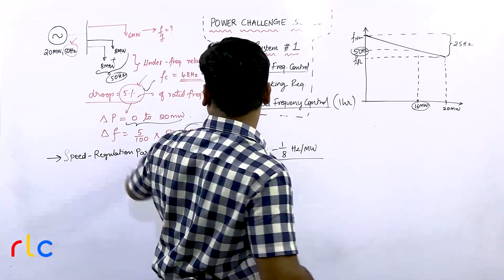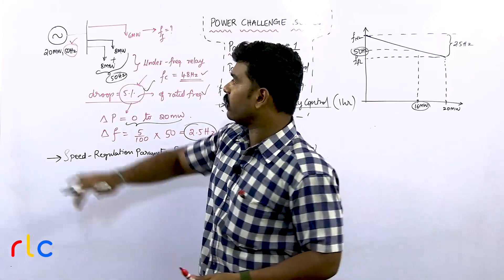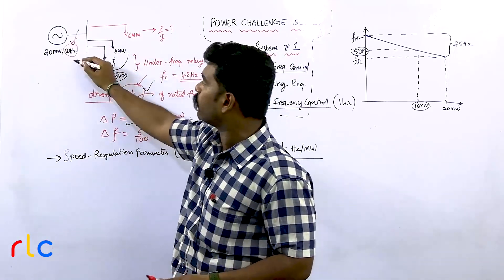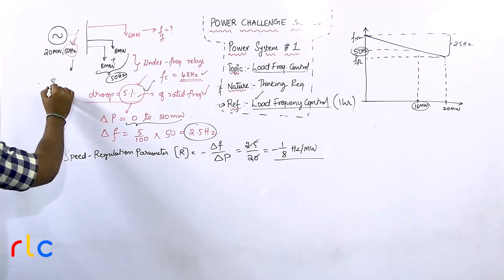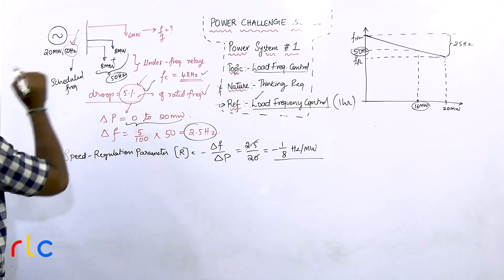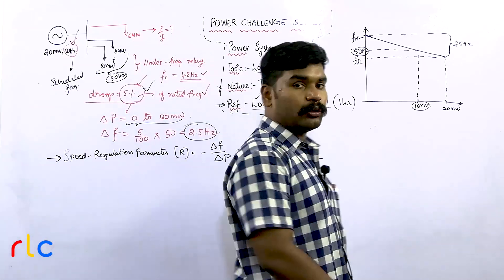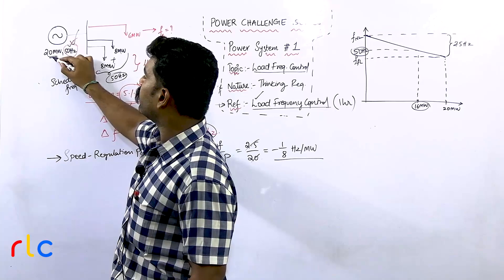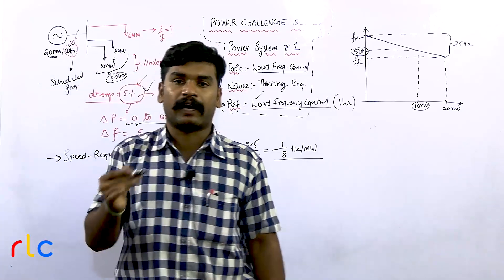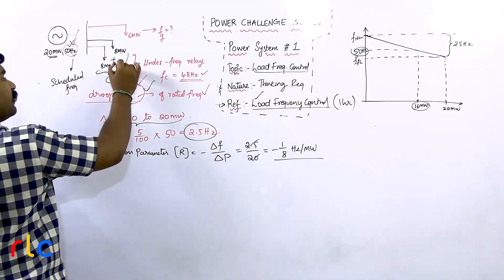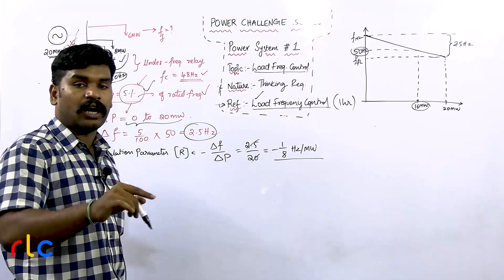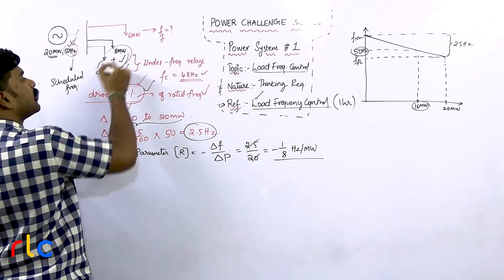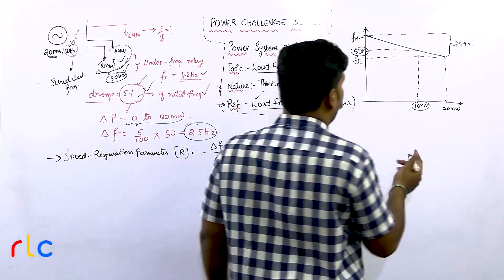The rated frequency of the generator is 50 hertz, but that doesn't mean when the generator is operating at 20 megawatt it is 50 hertz. This 50 hertz at 16 megawatt is what we call the scheduled frequency. Most students tend to get confused here — they think 50 hertz means the generator is operating at 20 megawatt. Don't think like that, because the question specifically gives you the condition: it is 50 hertz when the load is 16 megawatt.